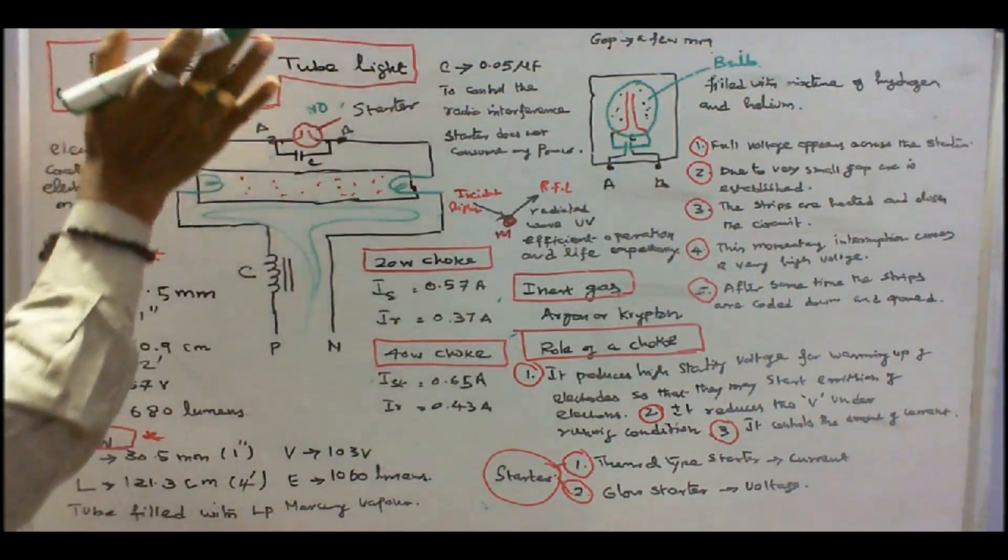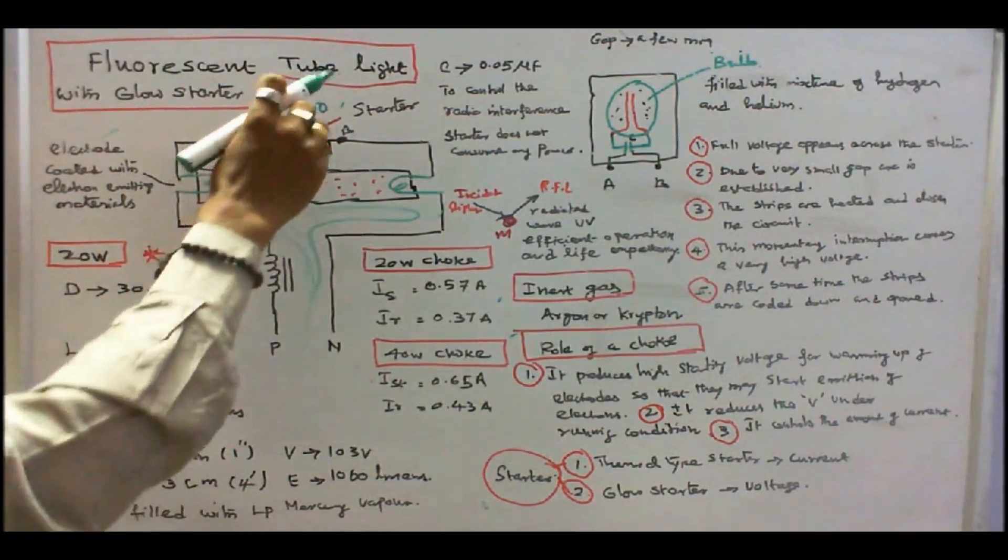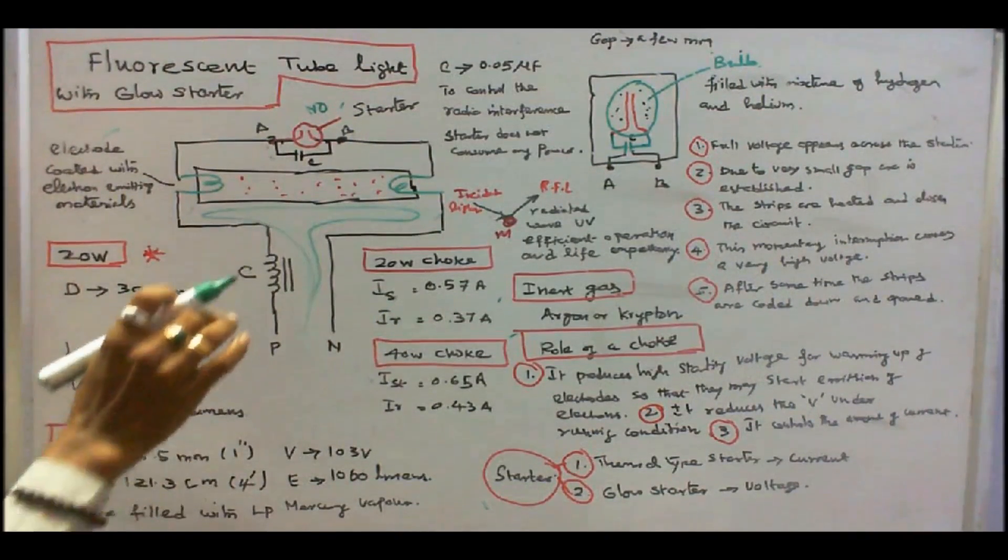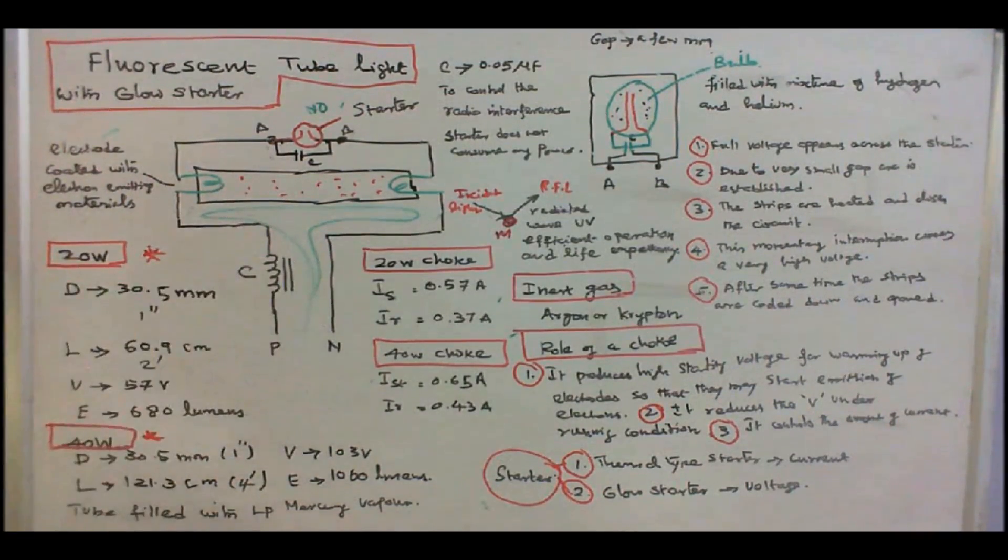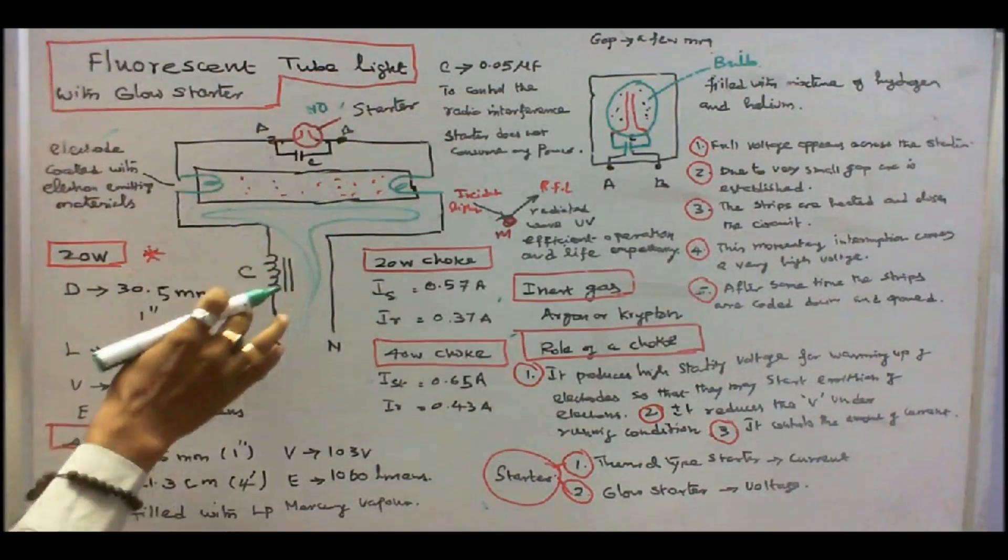So, this part is, the current will not go that side. Now, if you remove the starter, the tubelite will operate. So, for momentary state, we need a higher voltage. So, that's why we are using starter and a choke.